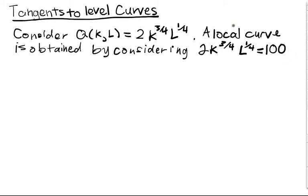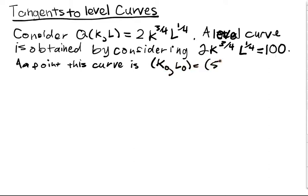This is a level curve, not a local curve. A level curve is done by that. Now, a point on this curve is K0, L0 equal to 50, 50. And you can verify that pretty readily.